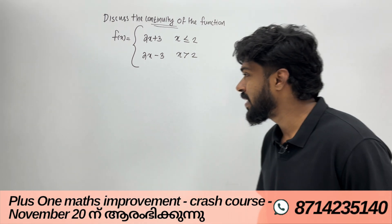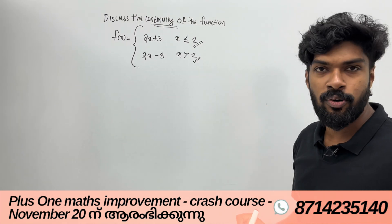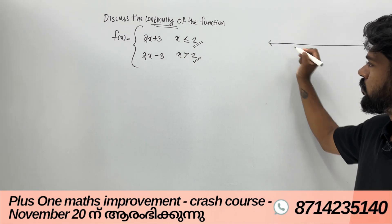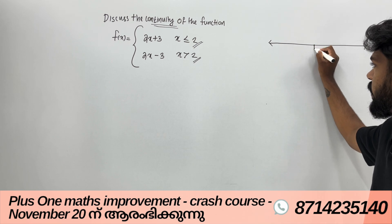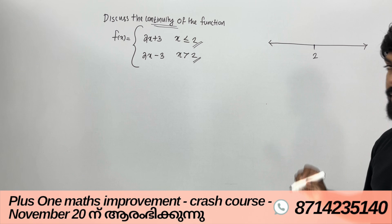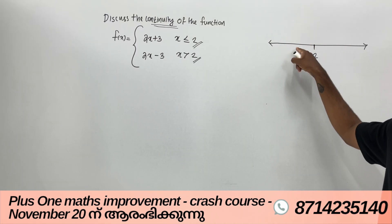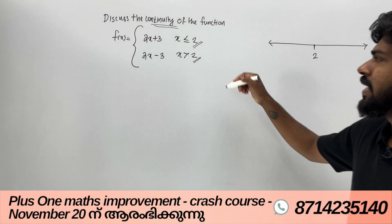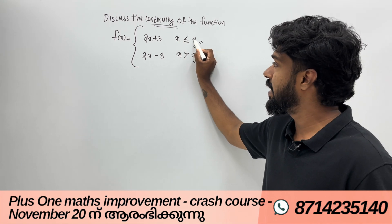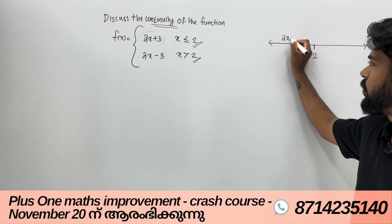The other side — we are checking at x equals 2 on the number line. We look at the left side and the right side. When x is less than or equal to 2, the function is 2x plus 3. That is the function on this side.